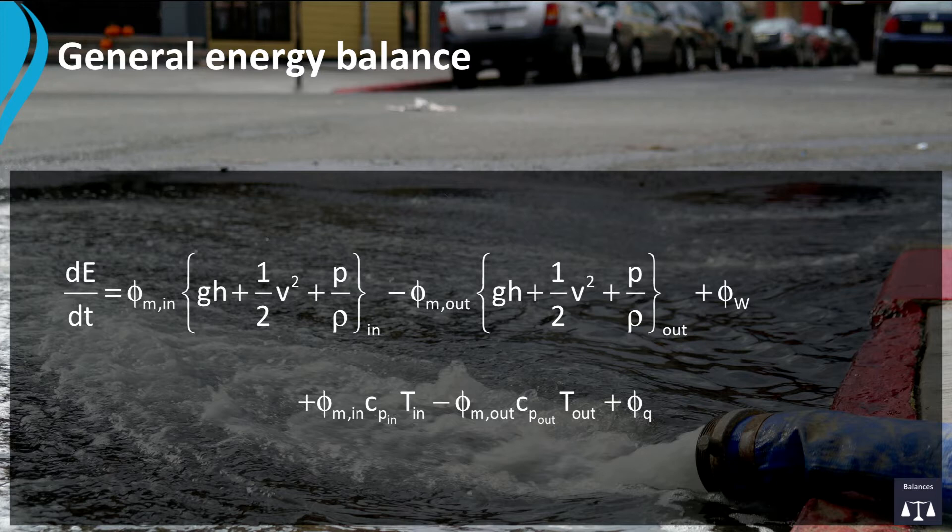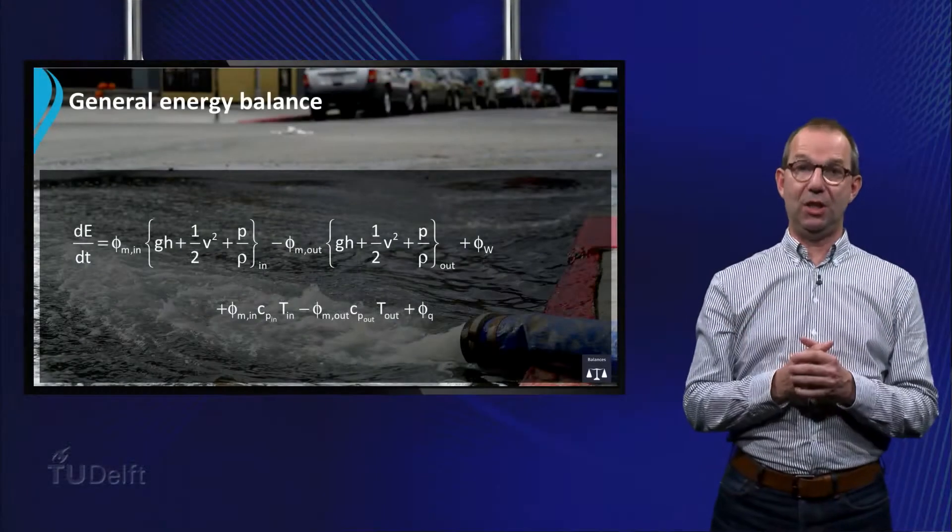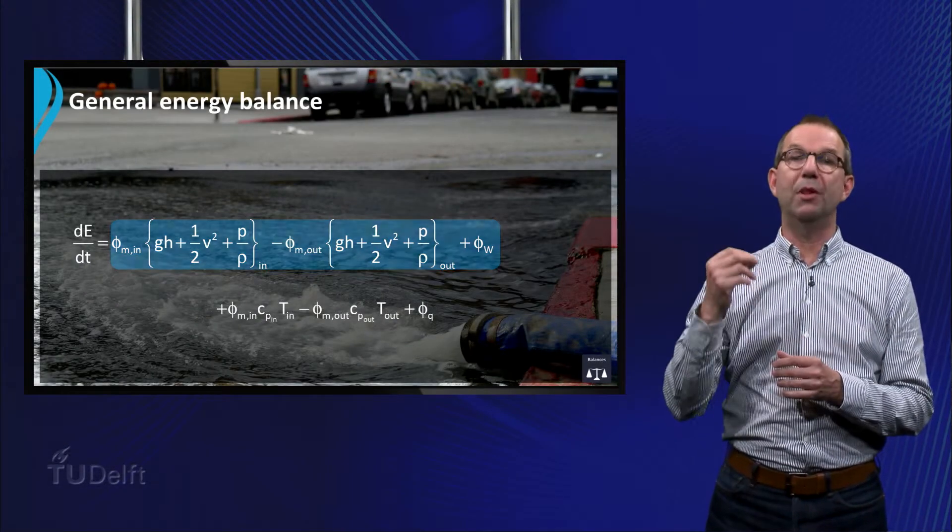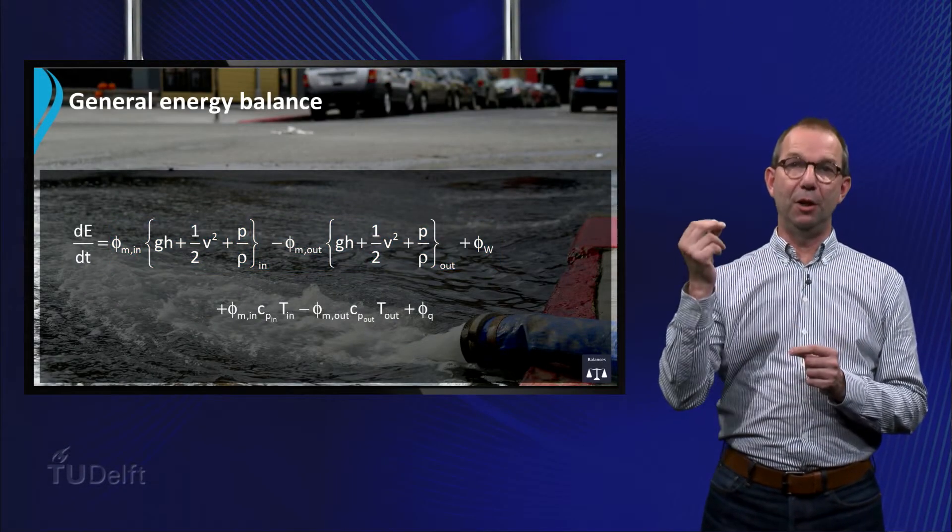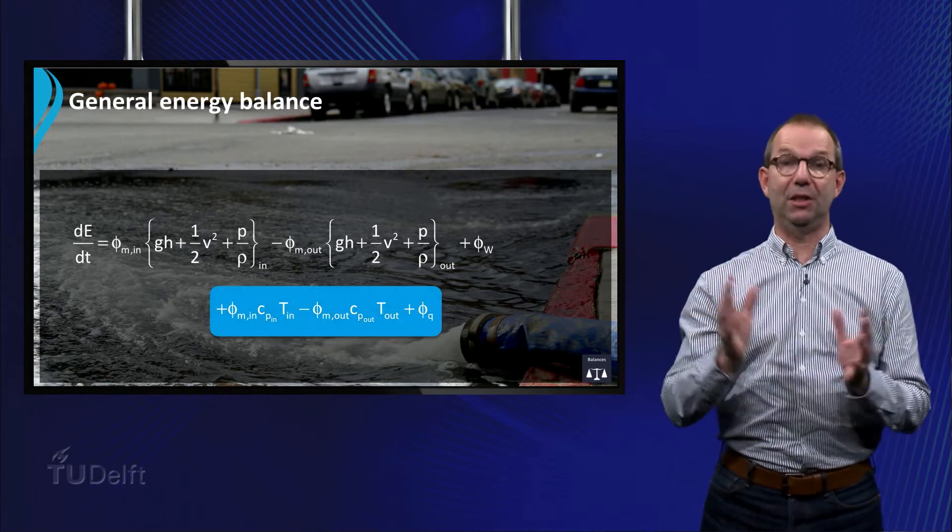dE/dt equals the flow in times the mechanical concentration in minus that of the outflow plus the work, and inflow of thermal energy minus outflow of thermal energy plus the heat added. The upper part of this equation is associated with mechanical energy, while the lower part is related to the thermal energy.